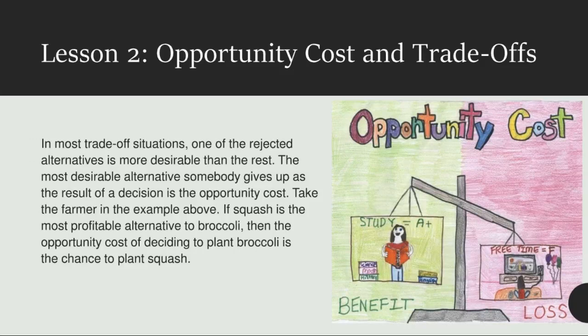Decisions also involve a concept called thinking at the margin. This means deciding about adding or subtracting one unit of a resource, such as one hour of sleep, in order to gain an advantage. In the example above, the decision was between sleeping late or studying, but you could also choose to sleep an hour late then wake up to study. To make a decision at the margin, you would compare the opportunity cost and benefit of each extra hour of studying. The benefit of adding one more unit of anything, such as one more hour of studying, is called the marginal benefit.